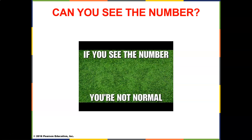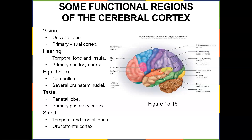Functions of the cerebral cortex: vision is the occipital lobe — primary visual cortex. Hearing is the temporal lobe and insula — primary auditory cortex. Equilibrium is the cerebellum. Taste is the parietal lobe. Smell is the temporal and frontal lobes.